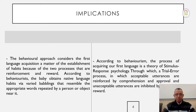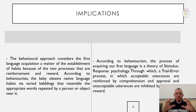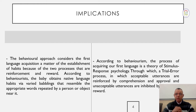According to behaviorism, the process of acquiring our first language is based on stimulus-response psychology — a trial-and-error process in which acceptable utterances are enforced by comprehension and approval, and unacceptable utterances are inhibited by the process of reward. Let's summarize these two fundamental ideas that explain how we humans come to acquire our first language.